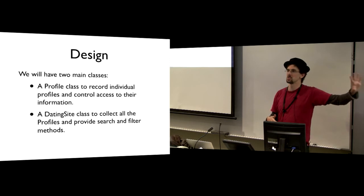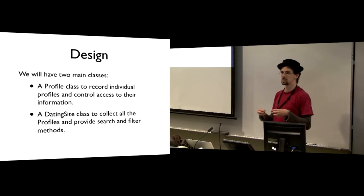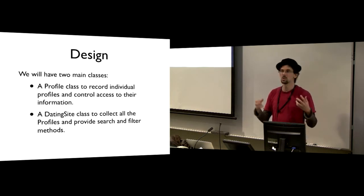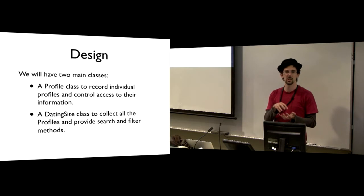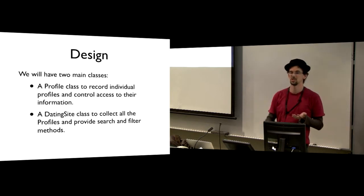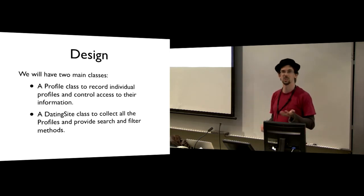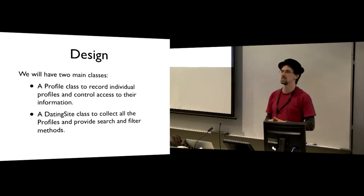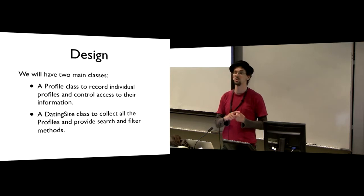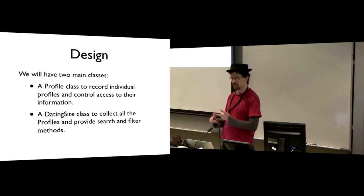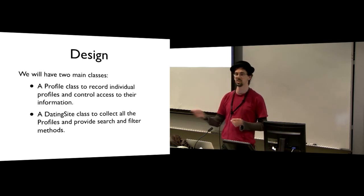We're going to use abstraction to break that down into smaller classes. We don't want to store all the data on the dating site. A natural object in this system is the idea of a profile — one profile contains a certain set of data about one user, and we can hide all that information inside that profile and just treat it as a single unit. So we're going to have individual profile objects to keep track of single users, and then we're going to use a bunch of those profile objects to implement a dating site.